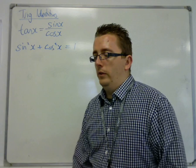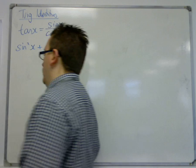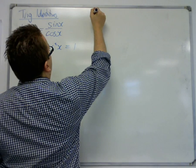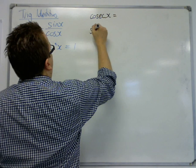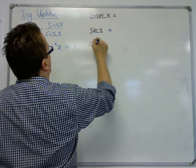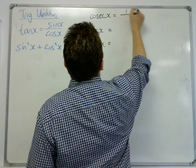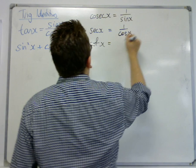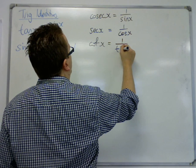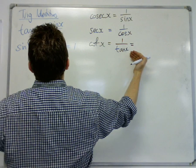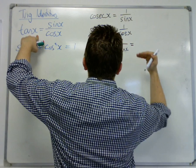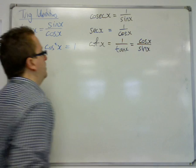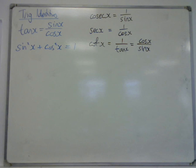Now from these, well actually before we do get on to the identities, let's quickly write up what Cosec, Sec and Cot were. So Cosec is 1 over sine, Sec is 1 over cos, and Cot is 1 over tan. And the other way of writing that would be, because tan is sine over cos, 1 over tan is cos over sine. So you can replace cos over sine with cot, they're the same thing.